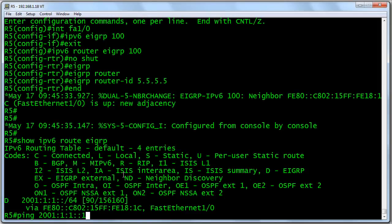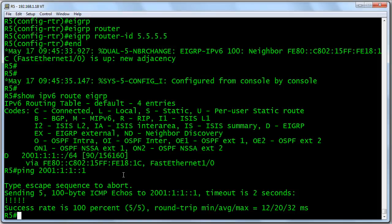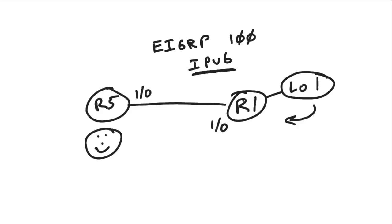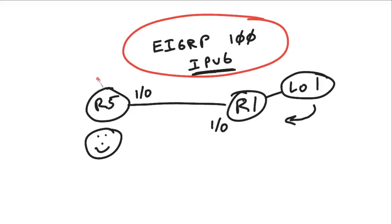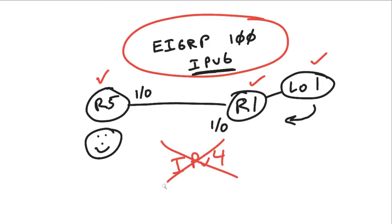Can we ping it? And of course we can ping that remote loopback thanks to EIGRP for IPv6. So what did we do in this micro nugget? We enabled EIGRP for IPv6 on R5 and R1, including a loopback 1 routing environment, and we said no to IPv4 — there was no IPv4 anywhere in the scenario. We saw one gotcha that cropped up as a result: the router ID assignment for EIGRP for IPv6. I hope this has been informative for you, and I'd like to thank you for viewing.